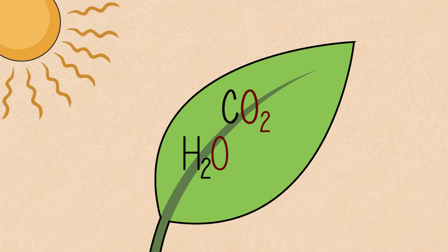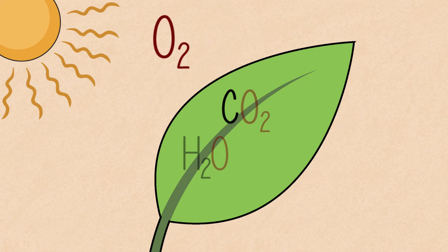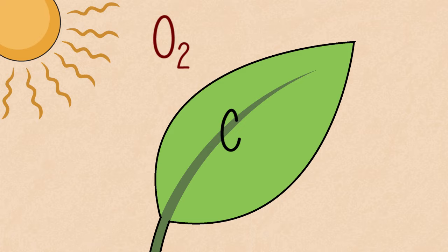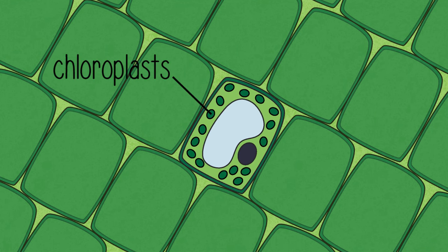Plants use the sunlight to pull oxygen away from water and carbon dioxide, allowing the plant to capture the carbon. This happens in the green chloroplasts found in the leaves of plants.